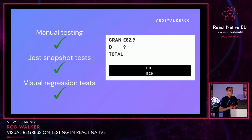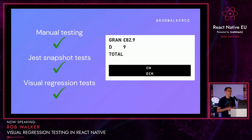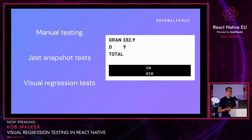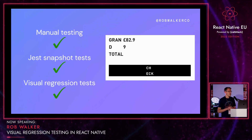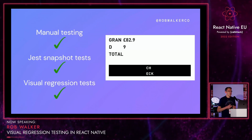With our earlier example, it's such an obvious issue that any type of testing would likely have caught it — a tester would have seen it, snapshot tests comparing styles would have indicated the style had changed, and visual regression tests with a screenshot of the shopping cart screen would have indicated it had changed. But how about a more subtle change?